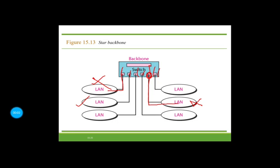Star backbones are mostly or predominantly used in distribution backbones inside a building. In a multi-floor building, this helps serve each one of the LAN connections on different floors. In such cases we install a star backbone network. We often find a rack or chassis in the basement where the backbone switch and all hubs or switches are installed, and from there individual lines are drawn physically in the form of a star topology and installed in a closet on the corresponding floor.